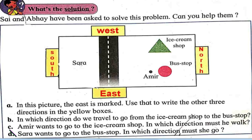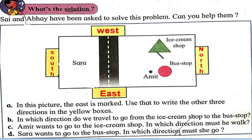Now answer number C. Amir wants to go to the ice cream shop — in which direction must he walk? Amir should go from here to the ice cream shop, which means he should go towards the West. The answer to question C is West.